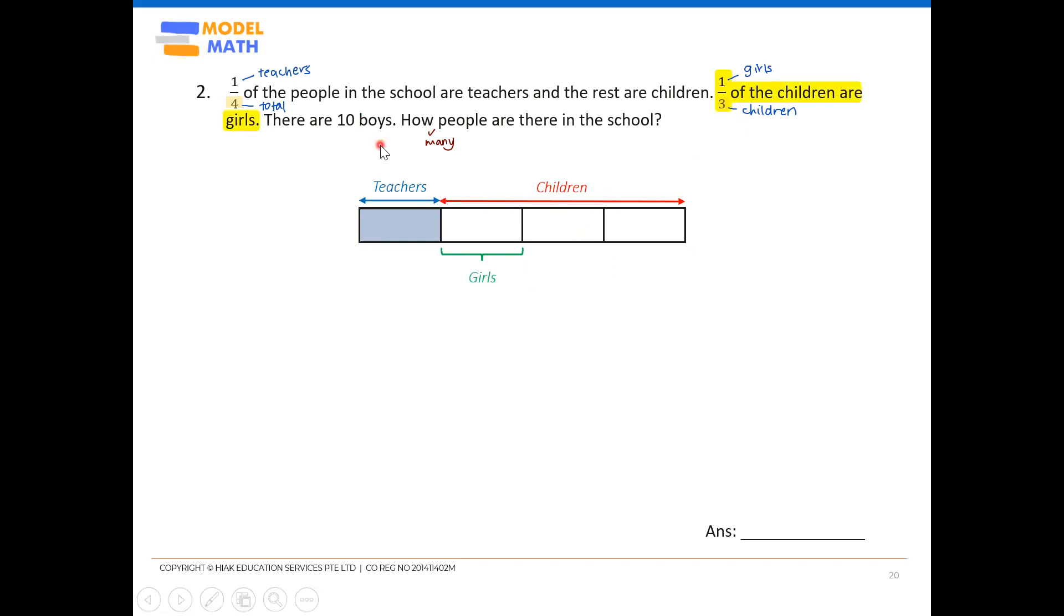There are ten boys. Now, where are the ten boys? Obviously, these children, three units. This one unit is the girls. So the two units here have to be the boys. And ten boys. And that's it. So model done.